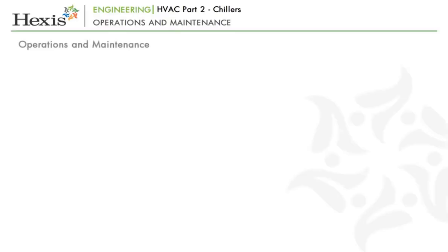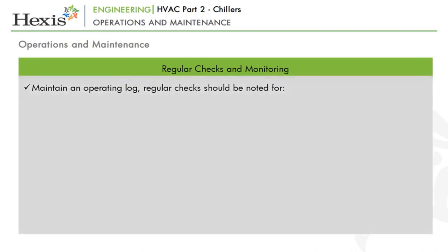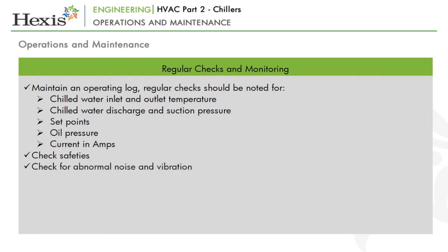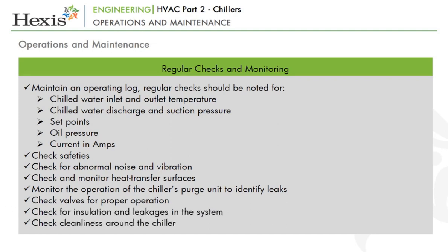Let us now learn about the operations and maintenance of chillers. All chillers require continuous maintenance for proper functioning. Regular checks and monitoring should include: maintaining an operating log; recording chilled water inlet and outlet temperature; chilled water discharge and suction pressure; set points; oil pressure; current in amperes; and safeties such as high pressure or low pressure cutout, oil pressure cutouts, and phase reversal protection. The operations of these safeties need to be checked. Also check for abnormal noise and vibration in the chiller, keep heat transfer surfaces clean, monitor the chiller's purge unit to identify leaks, check valves for proper operation, check for insulation and leakages, and check cleanliness around the chiller.